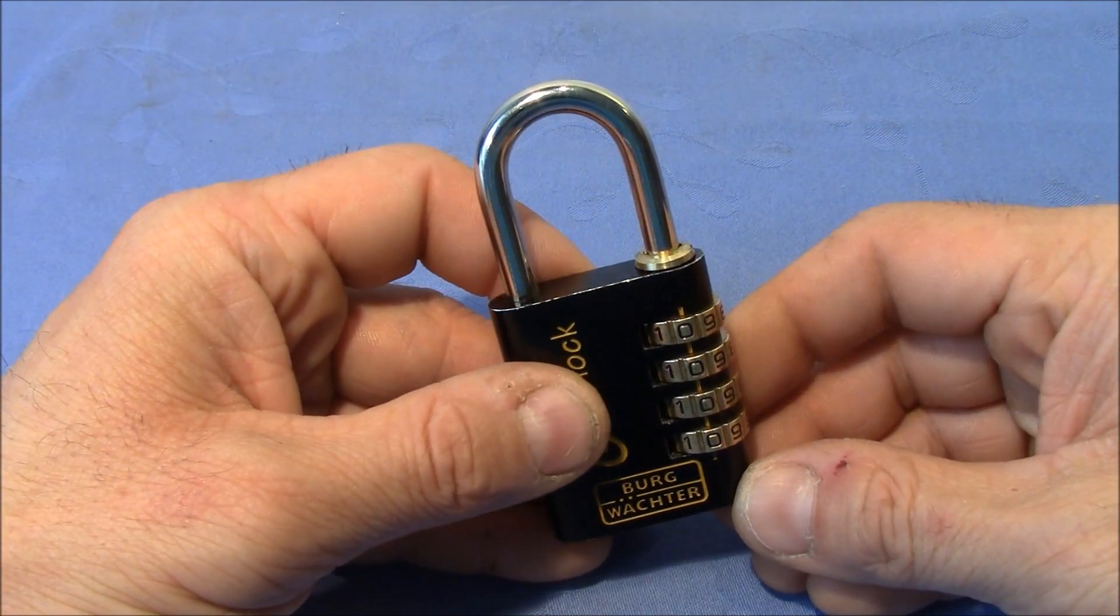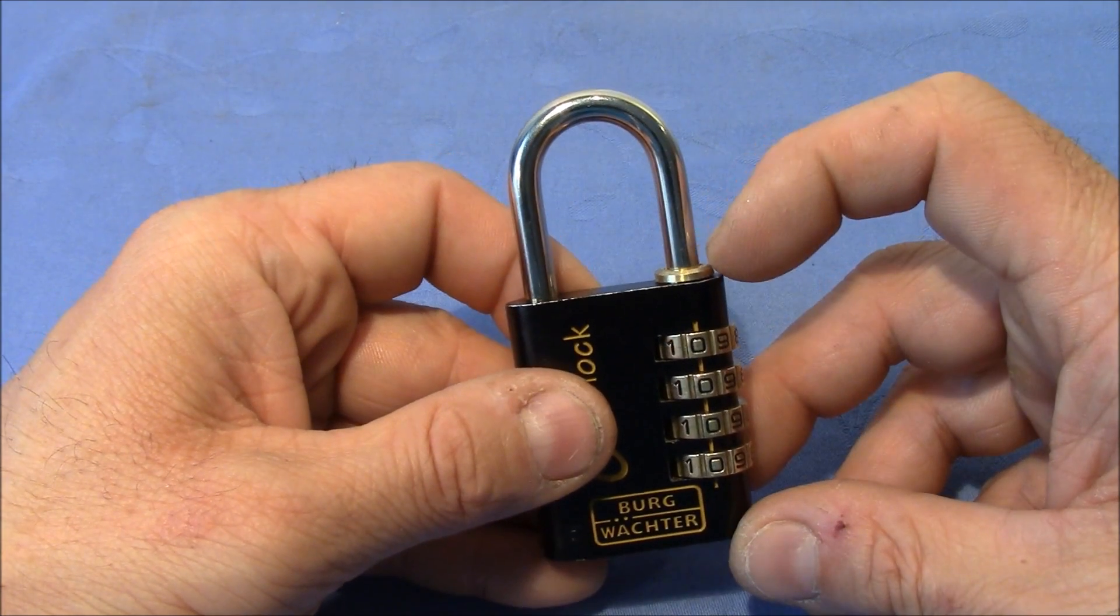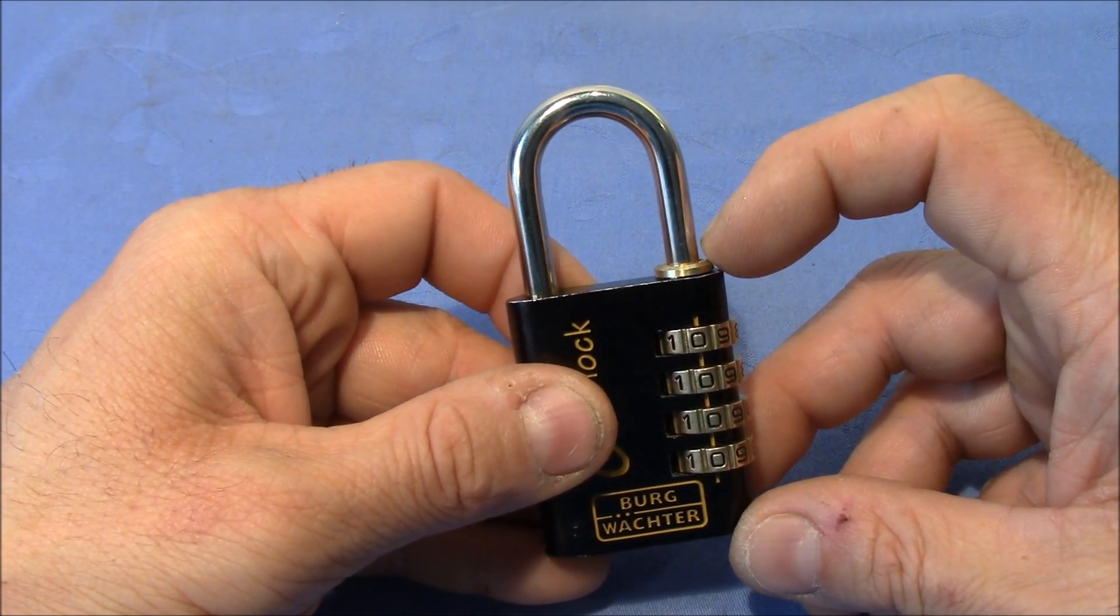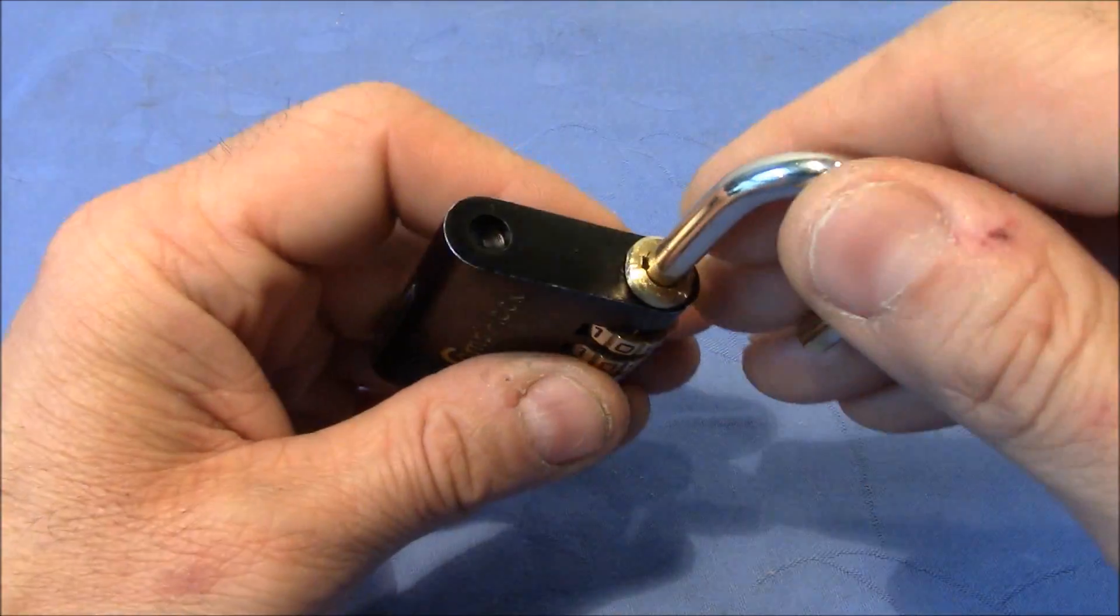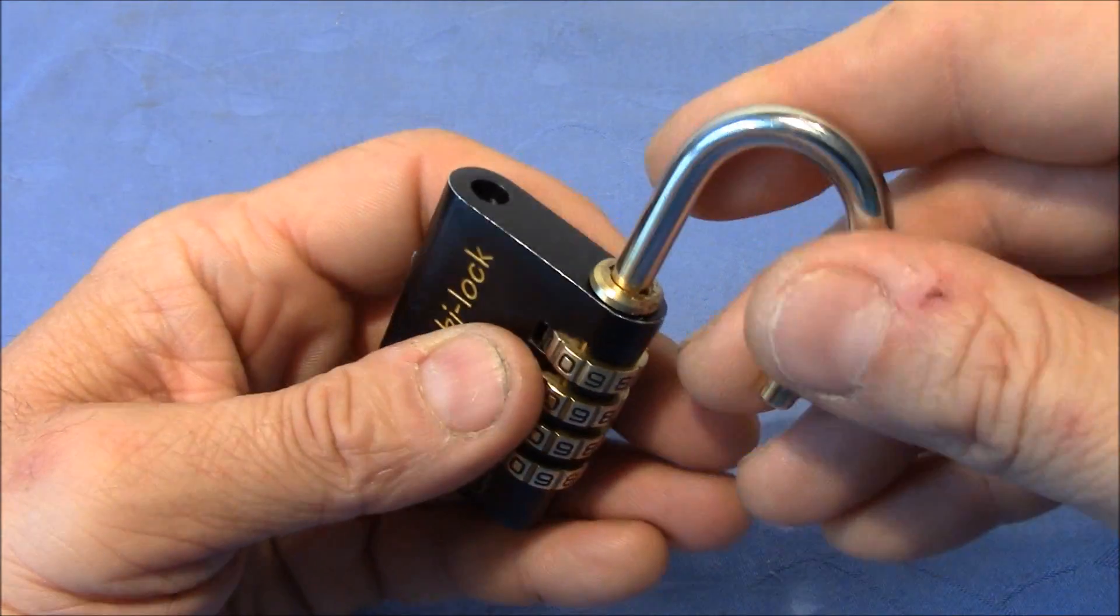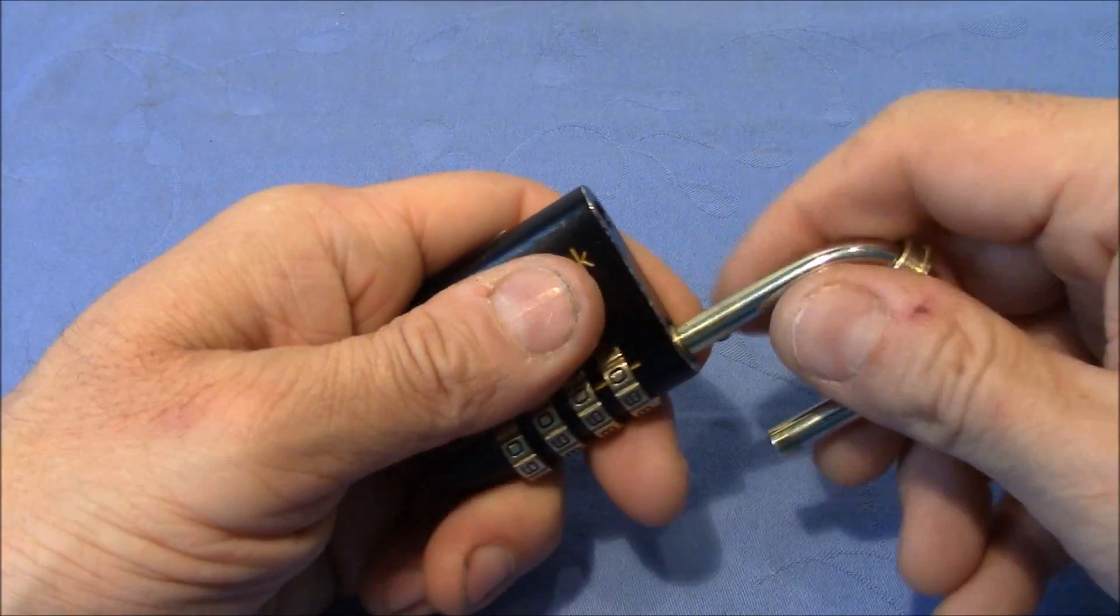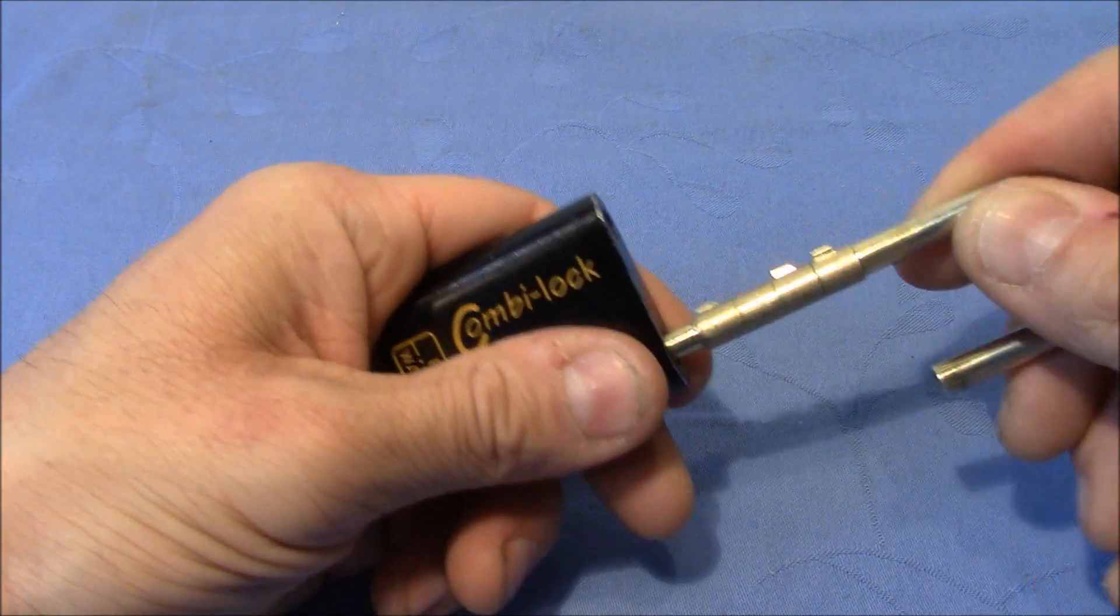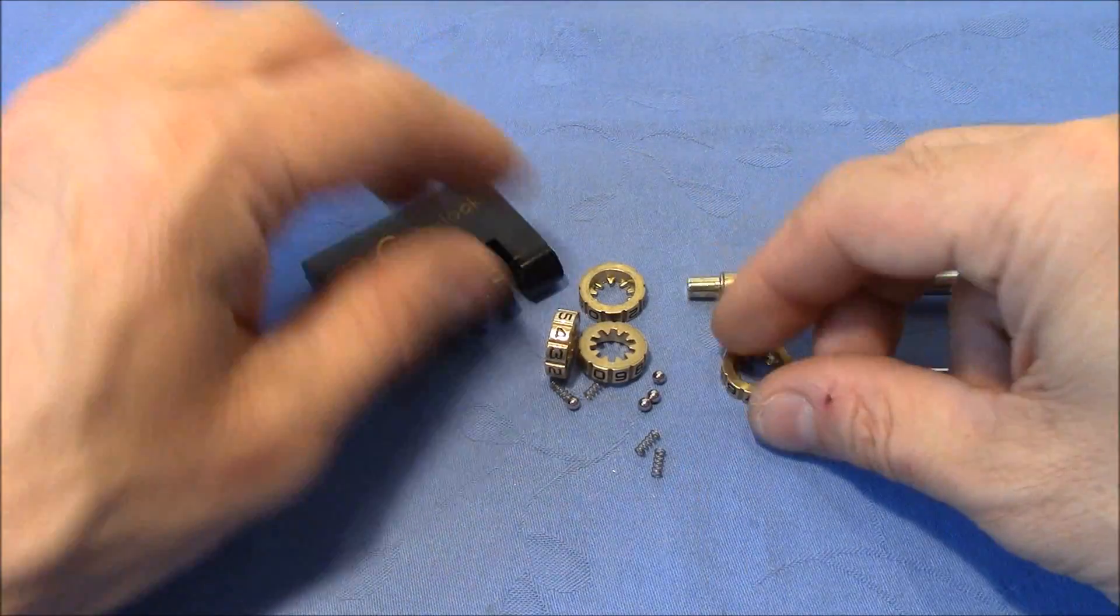In order to take these locks apart you have to remove this cap and I've done this before using a vise and now it's not as tight as before anymore. I can just use the shackle and put this little nose here in the hole and get this cap off and then I can remove the shackle and all the parts come apart.